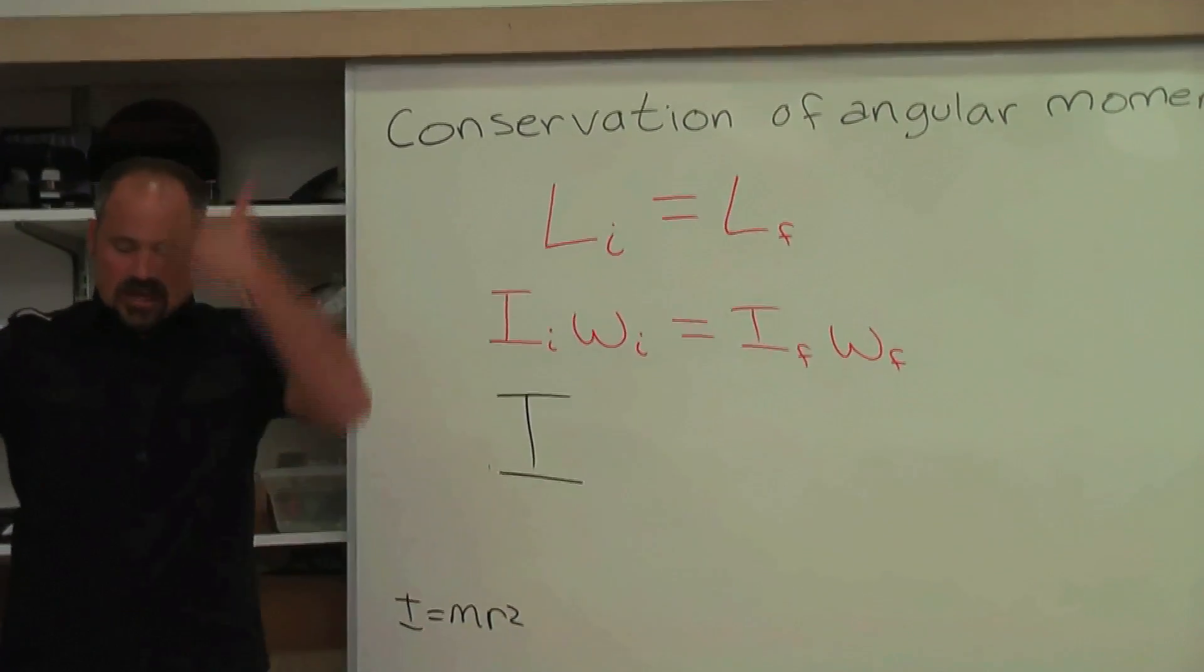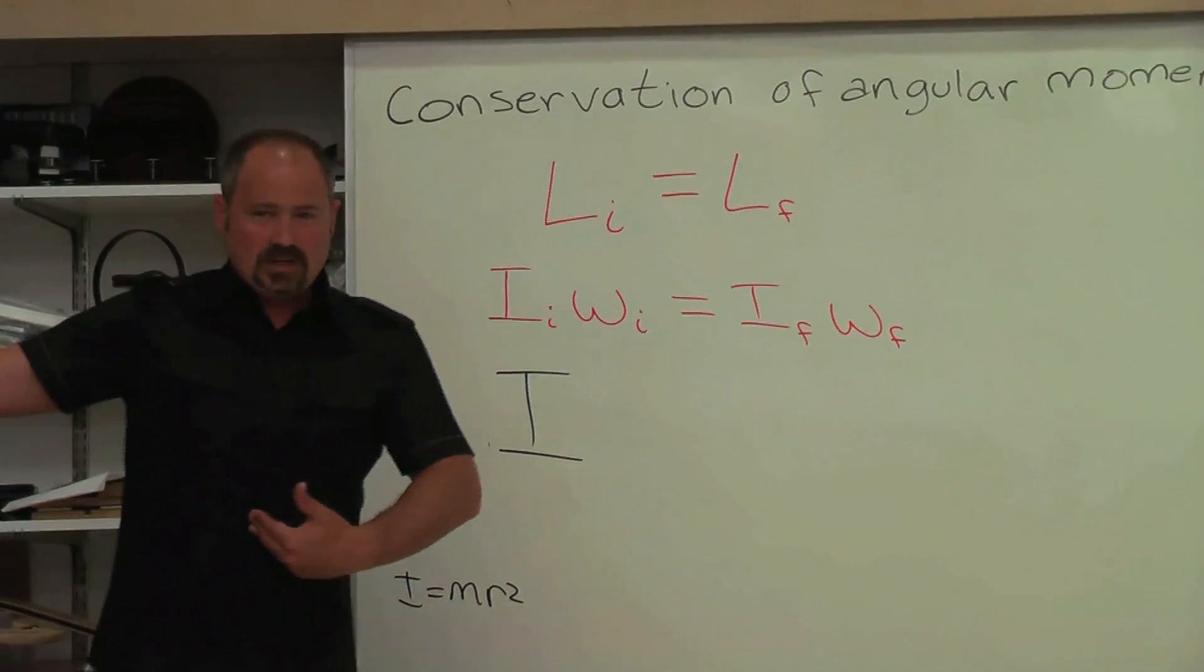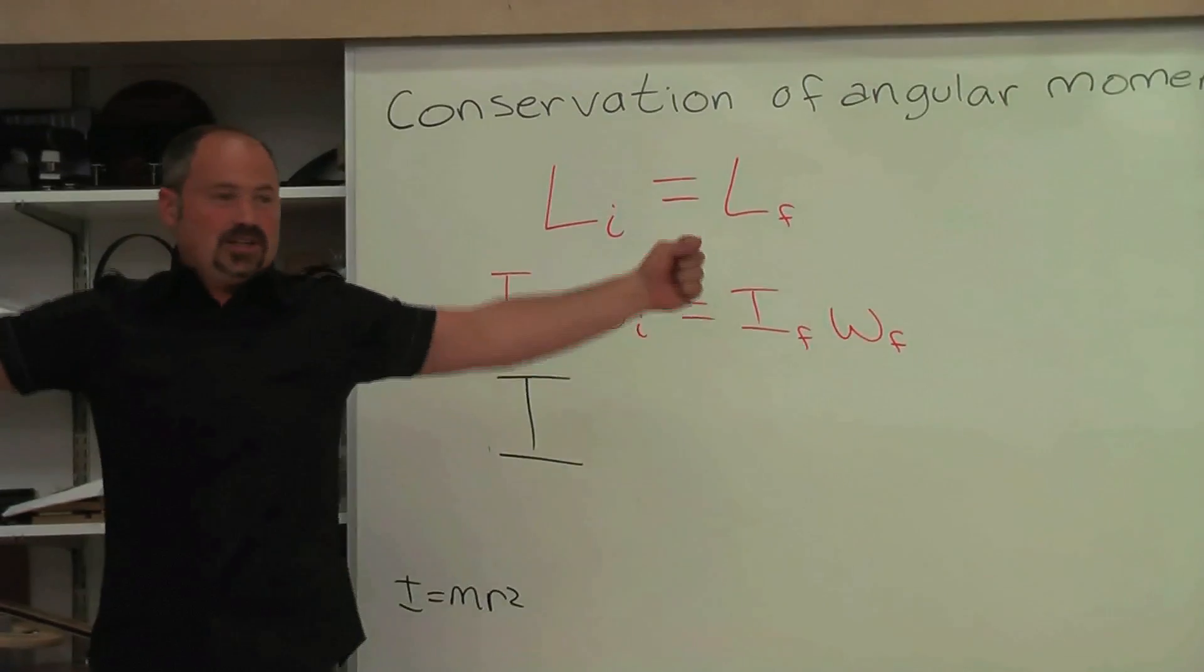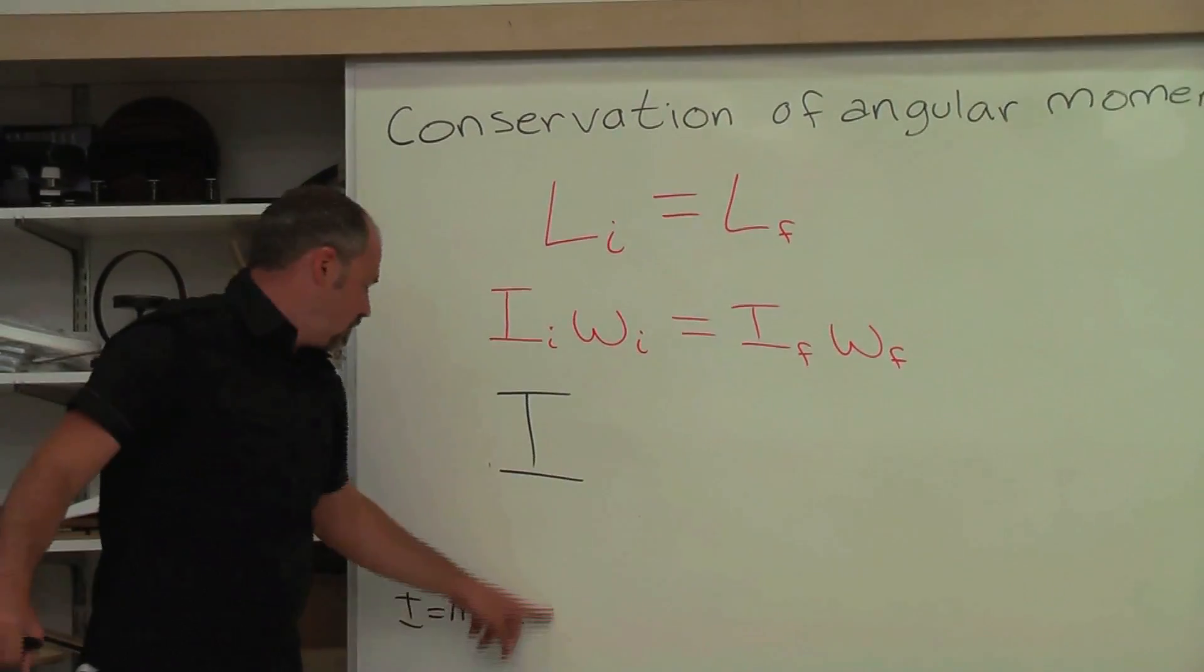So, that distance would be from the rotation axis, because that's how she was spinning, to where the mass is. So, since she had them out here, and since it goes into the square,